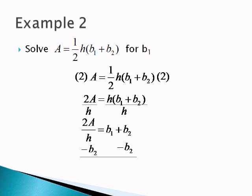But what I'm looking for is, are there any like terms on the left that I can combine? No. So we're just going to write it as a long expression. 2 times A over H minus B2 is equal to B1. B1 is by itself. I now have solved for B1. That is my answer.